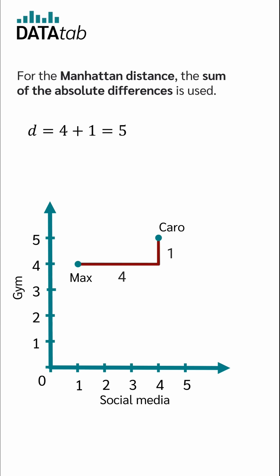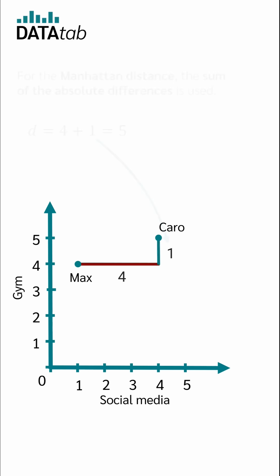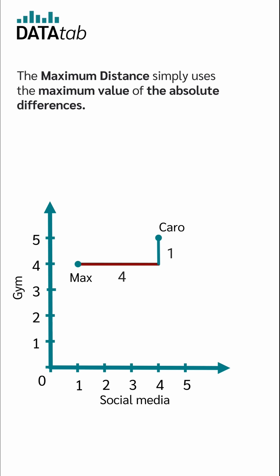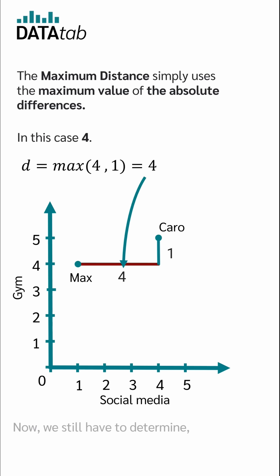For the Manhattan distance, the sum of the absolute differences is used, so we simply calculate 4 plus 1 and thus get a distance of 5. The maximum distance simply uses the maximum value of the absolute differences, which in this case is 4.